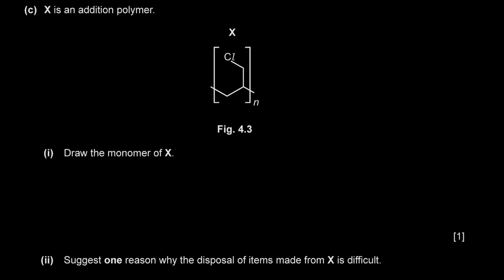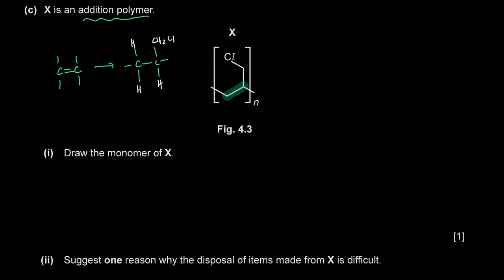X is an addition polymer — they've shown the repeat unit of X. Draw the monomer of X. Addition polymers form when alkenes polymerize; the pi bond breaks. In the repeat unit, the two carbons along the main chain were double bonded in the monomer. Looking at the repeat unit: one carbon has two hydrogens, and the adjacent carbon has one hydrogen and a CH₂Cl group. So the monomer is CH₂=CHCH₂Cl — a vinyl chloromethyl alkene with a carbon-carbon double bond.